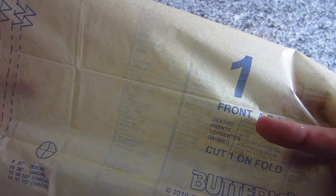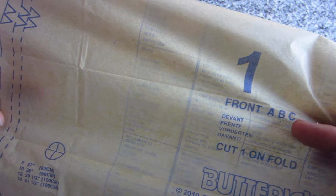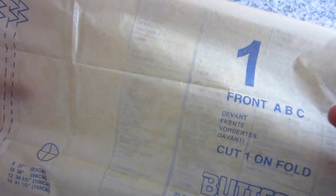This tells you that it's the front, kind of reinforcing the pattern number, and this tells you A, B, and C, the version of the skirt that you're working on. So again, all three of these things are kind of checks and balances just so you know you're using the right pattern piece.